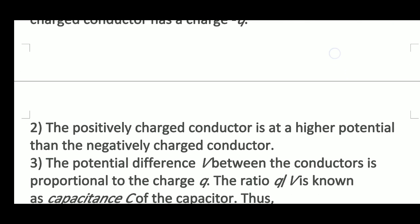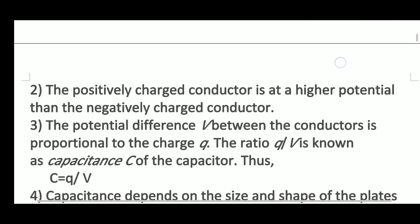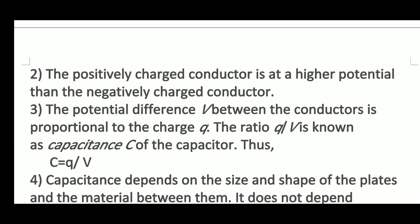Second point: the positively charged conductor is at a higher potential than the negatively charged conductor. Third, the potential difference V between the conductors is proportional to the charge Q. The ratio Q by V is known as capacitance C of the capacitor. Thus C is equal to Q by V.